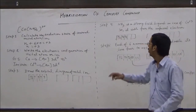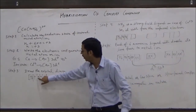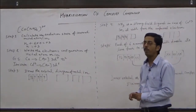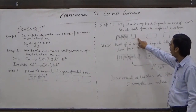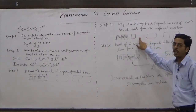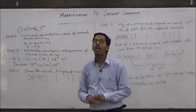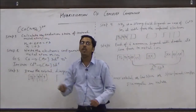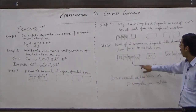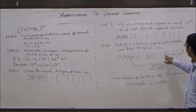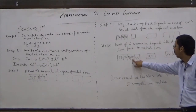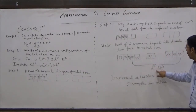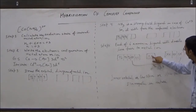A strong field ligand pairs the unpaired electrons. In this case, all electrons are initially unpaired, but in the presence of ammonia acting as a strong field ligand, all the unpaired electrons become paired. This is the new orbital diagram of Co³⁺ in the presence of the ammonia ligand. Since ammonia contains 1 lone pair and there are 6 ammonia molecules, each donates 1 lone pair to the metal ion — 1st, 2nd, 3rd, 4th, 5th, and 6th. The orbitals used are 2 d orbitals, 1 s orbital, and 3 p orbitals. So the hybridization of this complex ion is d²sp³.